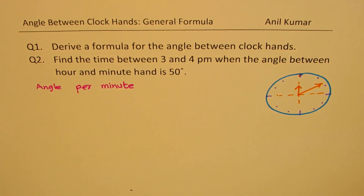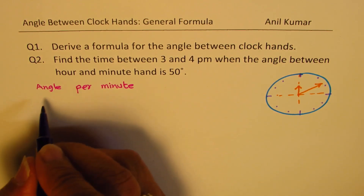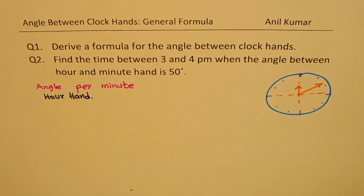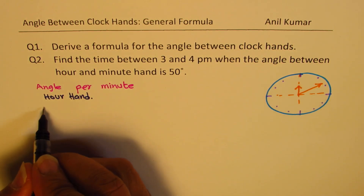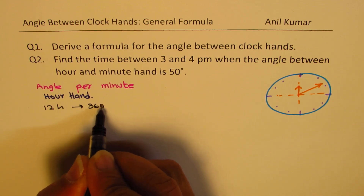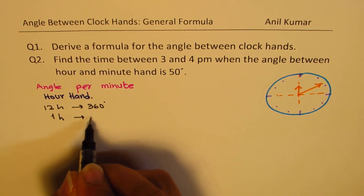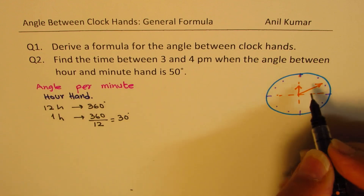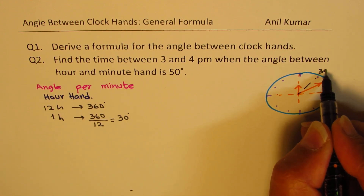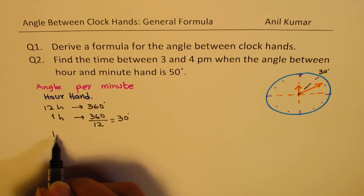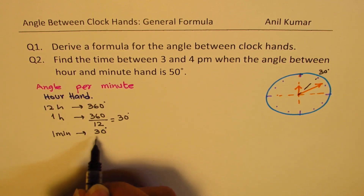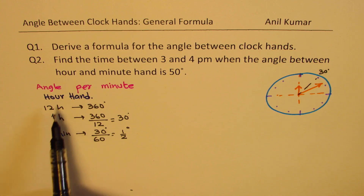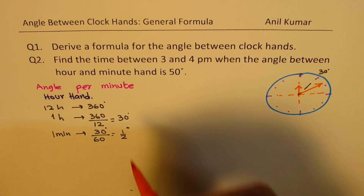Let's begin with the hour hand. As far as the hour hand is concerned, there are 12 hours and it goes through 360 degrees. In one hour, it will go 360 divided by 12, which makes it 30 degrees. And in one minute, it will go 30 degrees divided by 60, which is half a degree. So as far as the hour hand is concerned, it moves half a degree every minute.